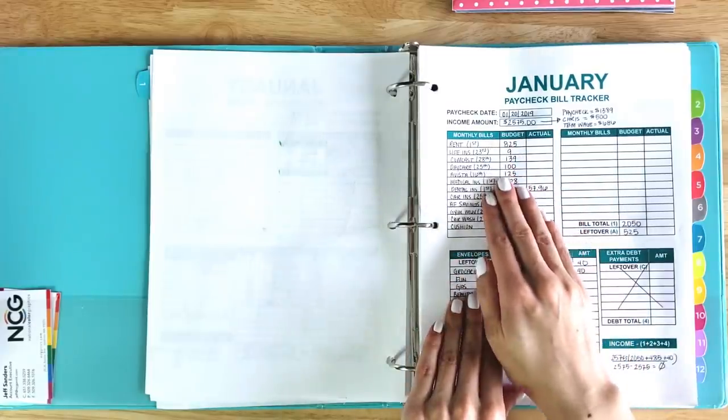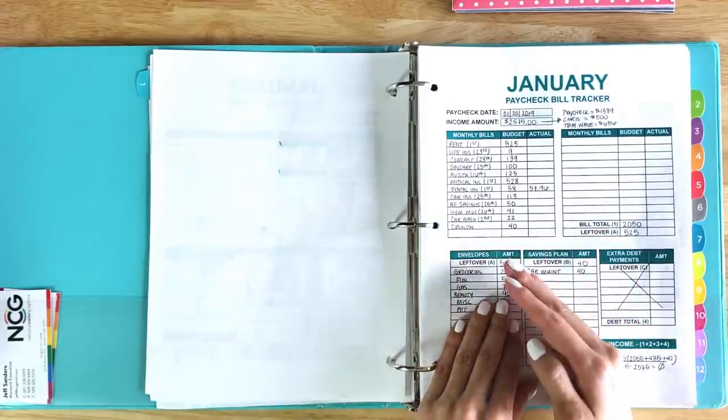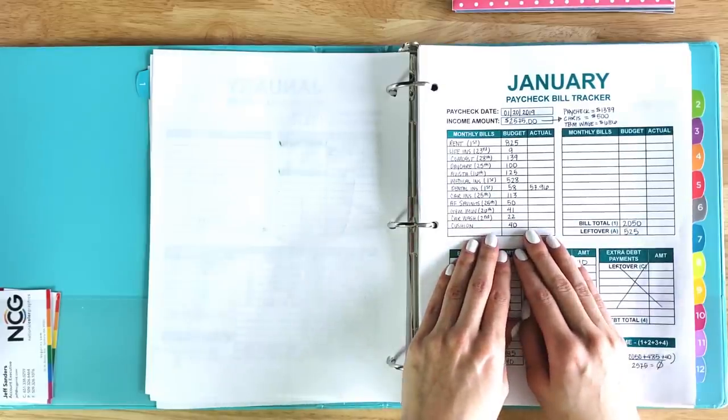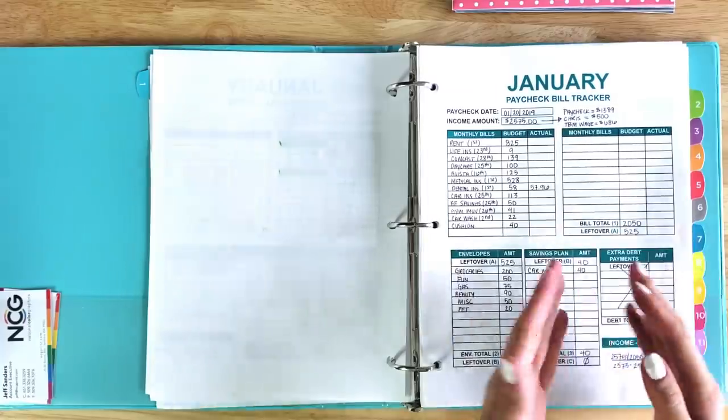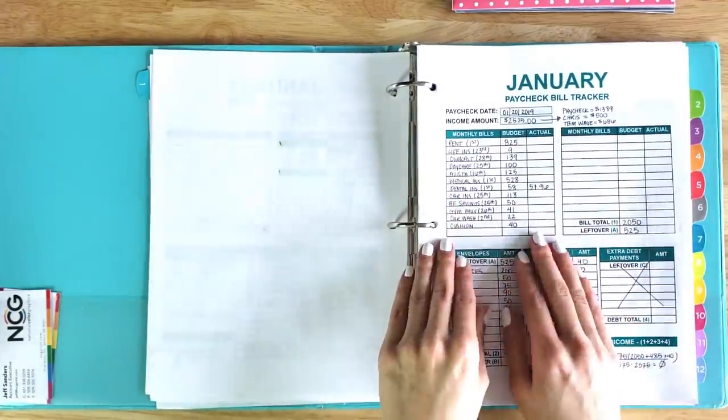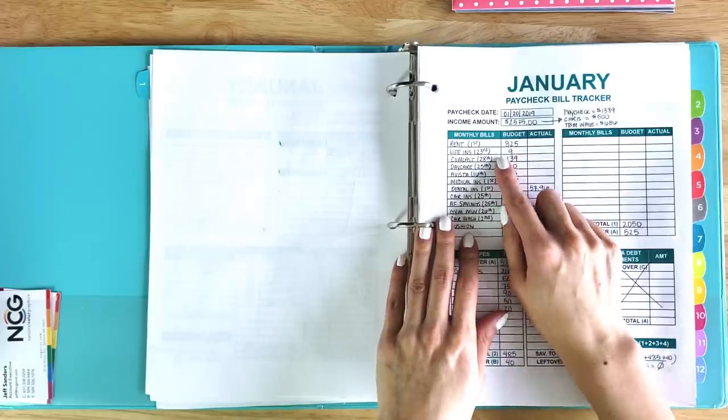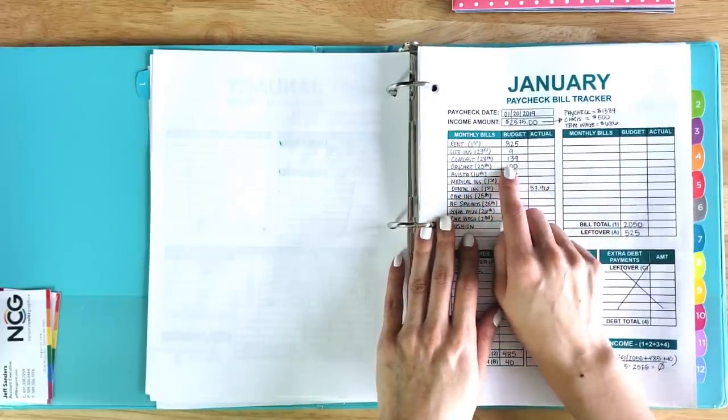With this month, I listed out my regular bills. These are the bills that have to be paid. These are what we call fixed expenses, and these are things that I pay for month to month to month that don't really change that often with the amounts. Obviously, I have my rent, my life insurance.